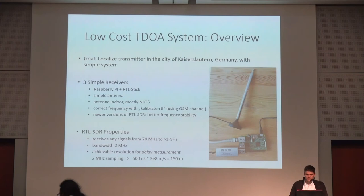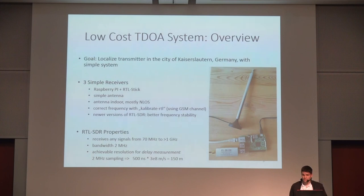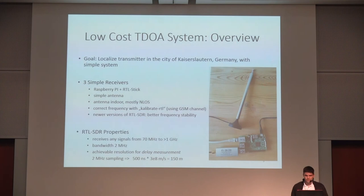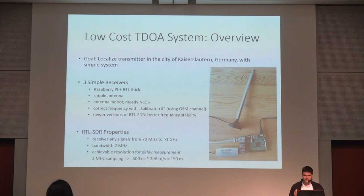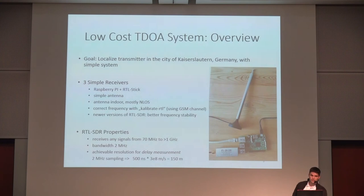The goal of this simple system was to locate signals in the city of Kaiserslautern, where I live, using a Raspberry Pi and an RTL-SDR stick with a very simple indoor antenna. Mostly we have non-line-of-sight, which is not optimal but was the easiest way to do it. The frequency must be the same in all receivers, so I used a tool called Calibrate RTL, which uses GSM channels to get exactly the same reception frequency in every receiver. It's important to use one of the newer versions of the RTL-SDR because the frequency stability is much better than in early versions.